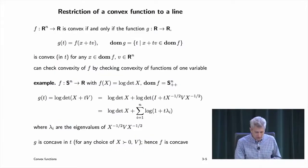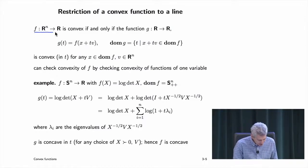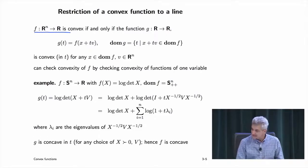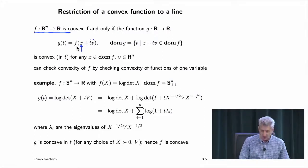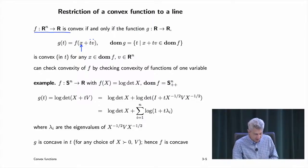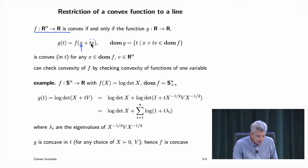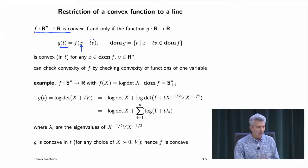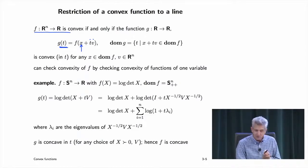Here's a key trick: if you have a function on Rn, you can restrict it to a line. A line is given by x + tv, where x is the base point, v is the direction, and t is a real parameter. Define g(t) = f(x + tv). The result: a function is convex if and only if, when restricted to all lines, it's convex.